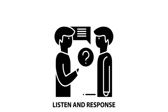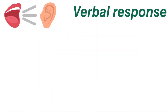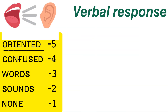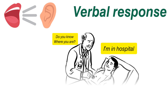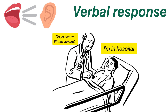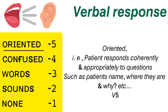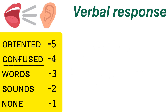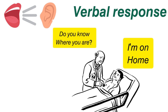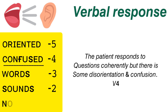Next is Verbal Response. Oriented is 5 points — the patient correctly answers questions such as their name, the month, and the year. Confused is 4 points — if we ask the patient questions and they answer but are confused in their responses, that is 4 points.